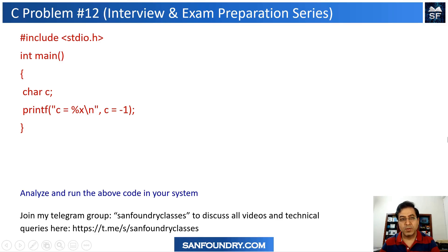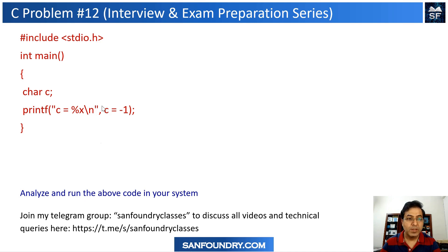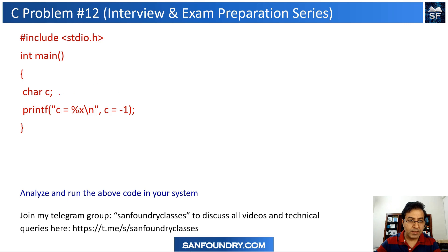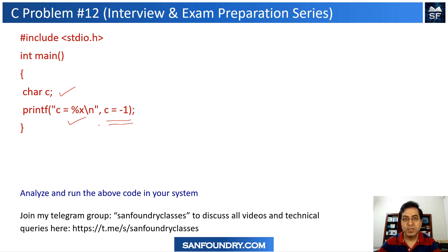Dear friends, in this particular problem, I am going to talk about another rule in C programming language where we have slightly different answers based on how things work on the stack. You will see in this particular piece of code where we have defined a character variable. Once you have this character variable C, we assign a value of minus one, and then we are trying to display the outcome. You should try to pause the video, look into your solution, and then resume.